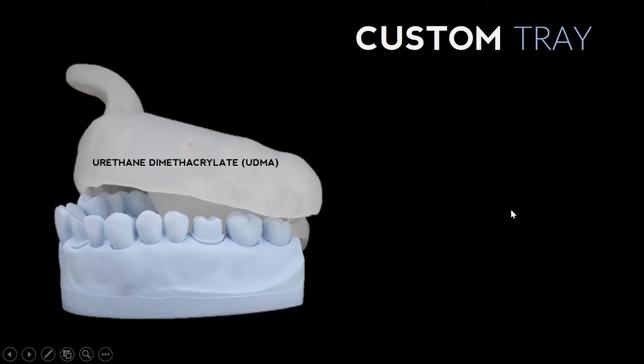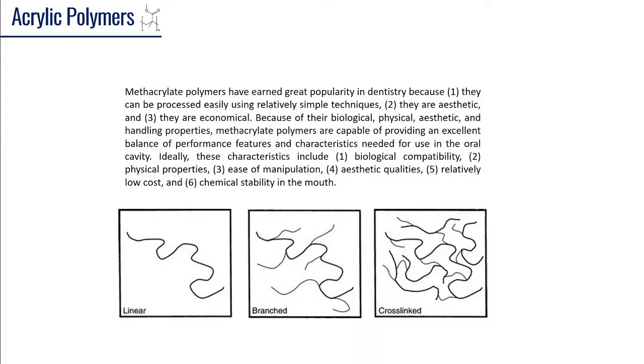The material we're going to use in making this tray is urethane dimethacrylate, and it's an acrylic polymer. Let's take a few minutes to go over the science behind these polymers.